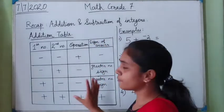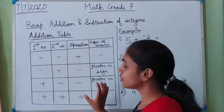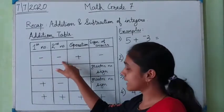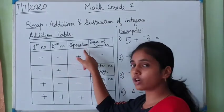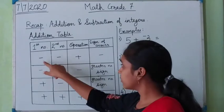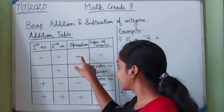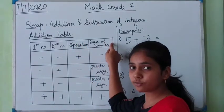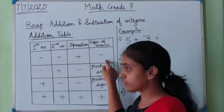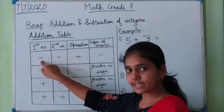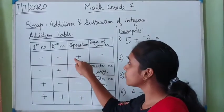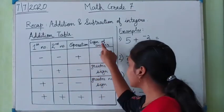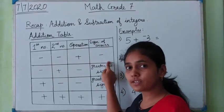This is a table which I have made for you — the addition table of integers. If the first integer is negative and the second integer is also negative, you have to add those two numbers. The sign of the answer will be negative. So your final answer will be negative.